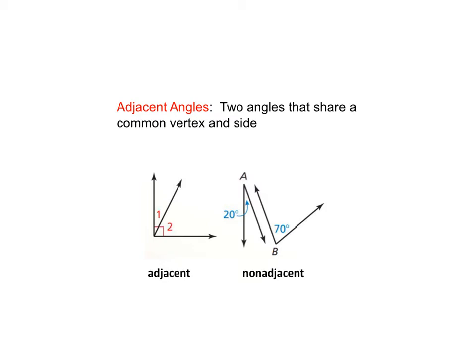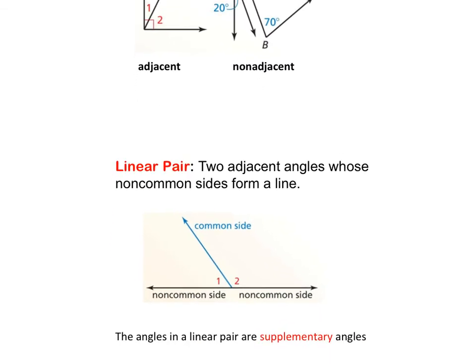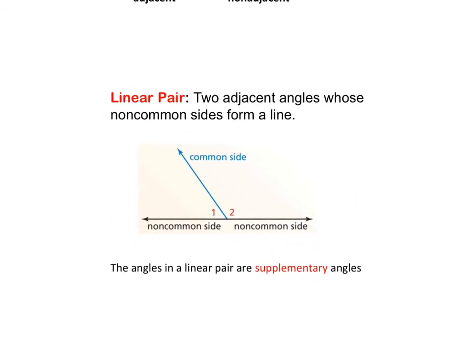Now we have known what adjacent angles are. Let's look at a special case of adjacent angles, which is called linear pair.